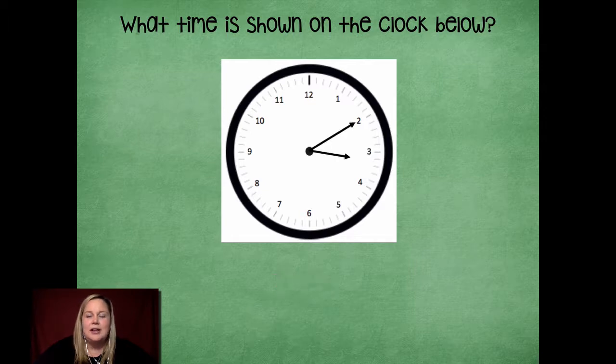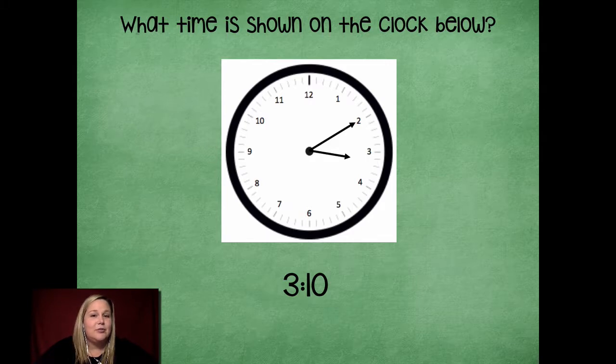All right. What time is shown on this clock? Hmm, a little tricky. The time shown on this clock is 3:10. Notice that the minute hand is pointing to the two because that represents 10 minutes, and the hour hand is just past the three to represent just after three o'clock.